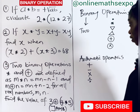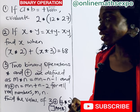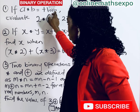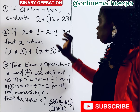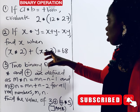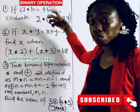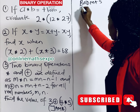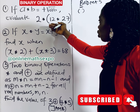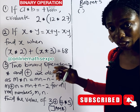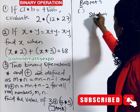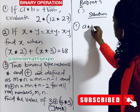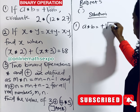Let's take question number one. We are told that a ∗ b is equal to the positive square root of ab. We are asked to evaluate the expression. Remember your BODMAS — the one in the bracket should be done first. So you are going to work with the inner bracket first before answering the outer part. Let's begin the solution.